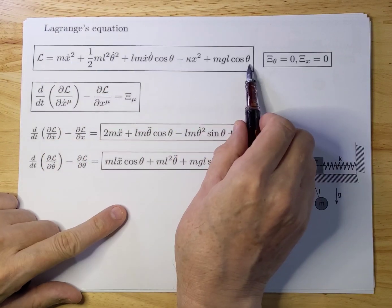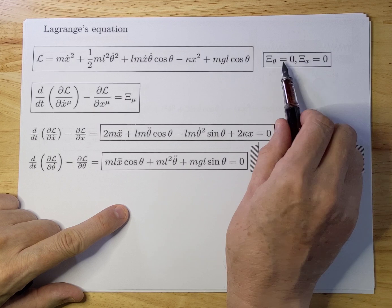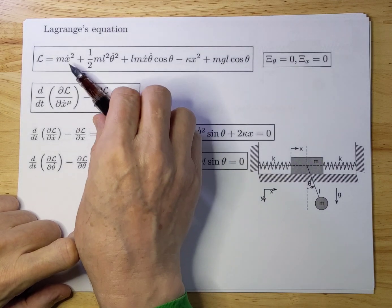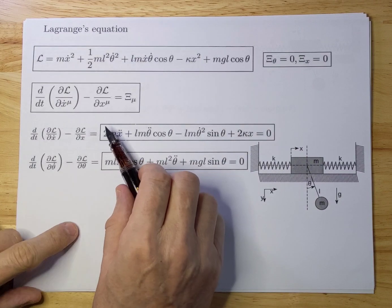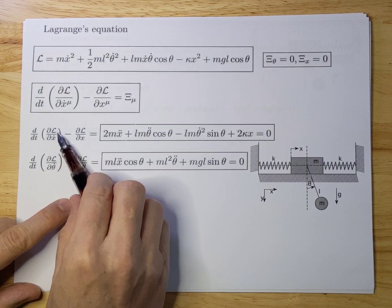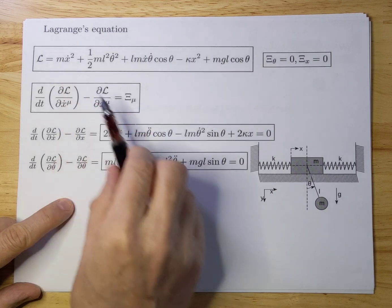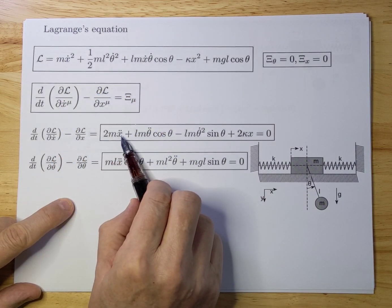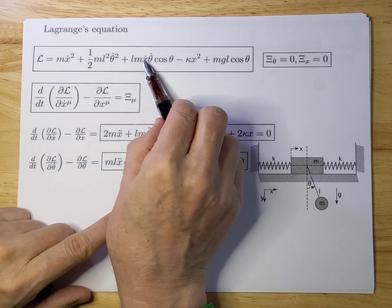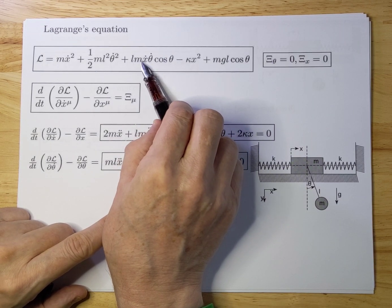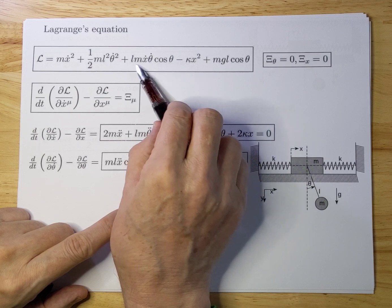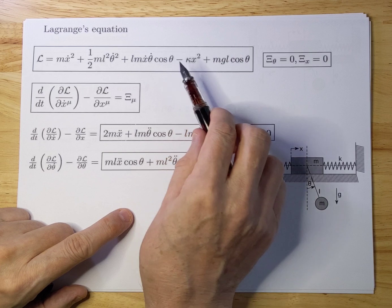Again, I copied the Lagrangian here for reference, along with the generalized forces, which were both zero, and the Lagrangian equation. We have two generalized variables, so we start with the first one, x. We differentiate the Lagrangian with respect to x-dot. That gives a term with 2m x-dot. There's another x-dot term here, so differentiating the Lagrangian with respect to that gives L m theta-dot cosine theta.